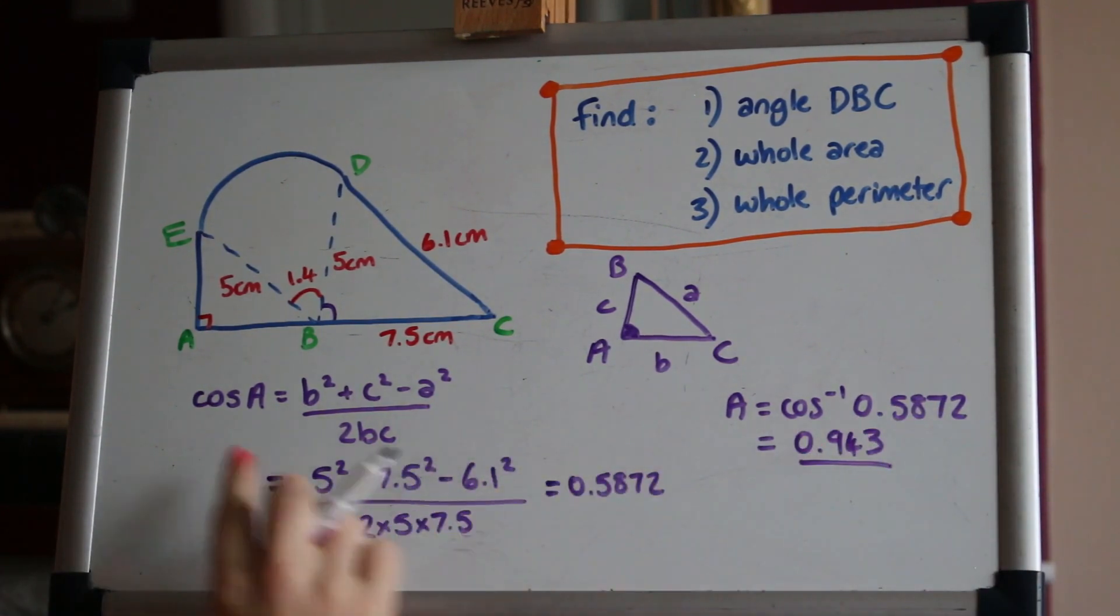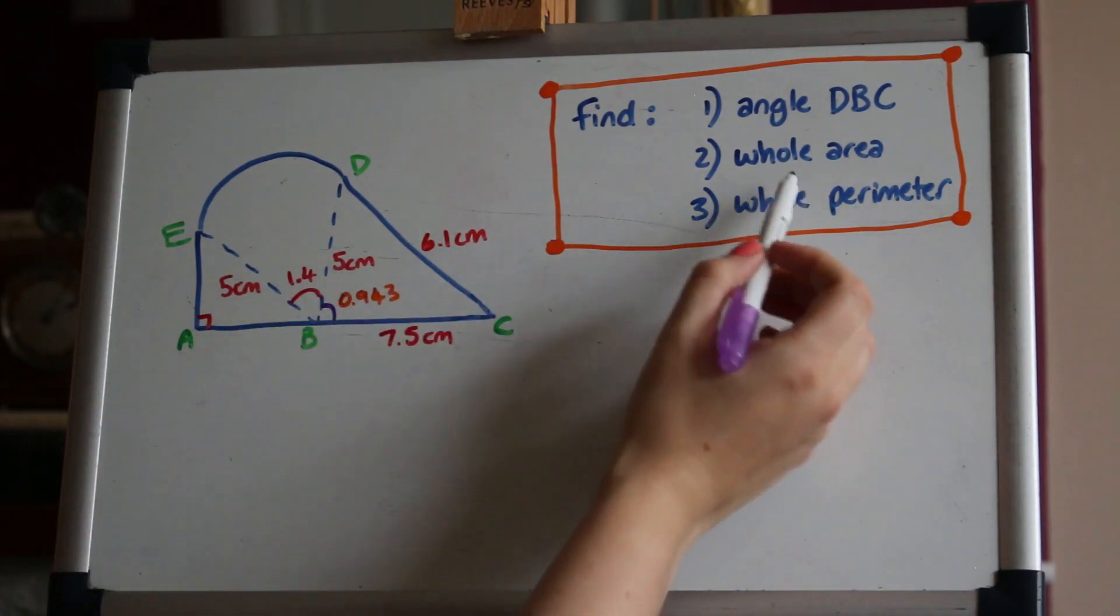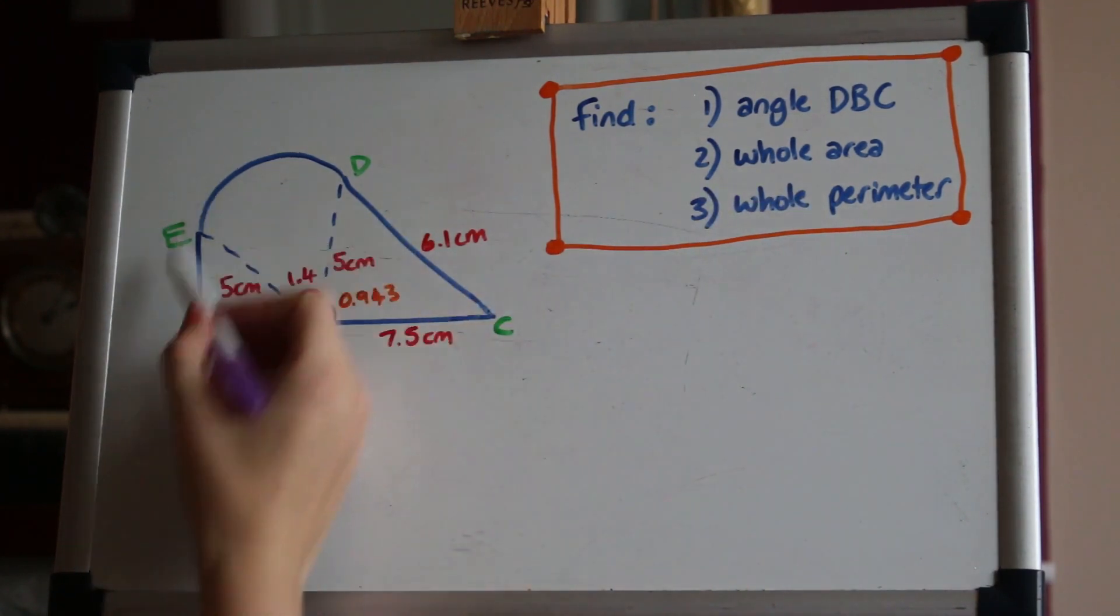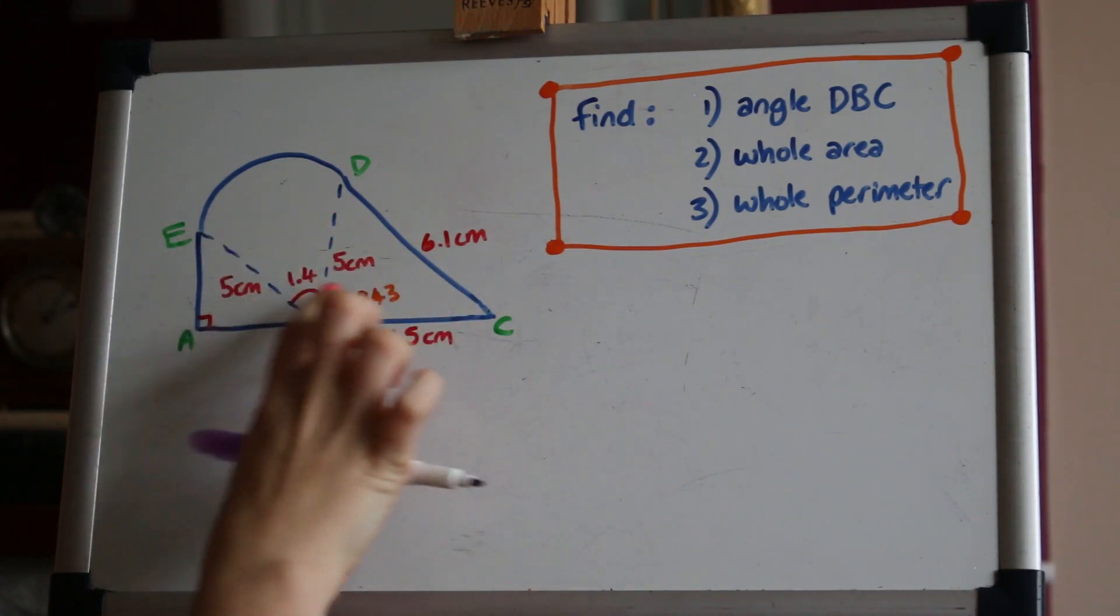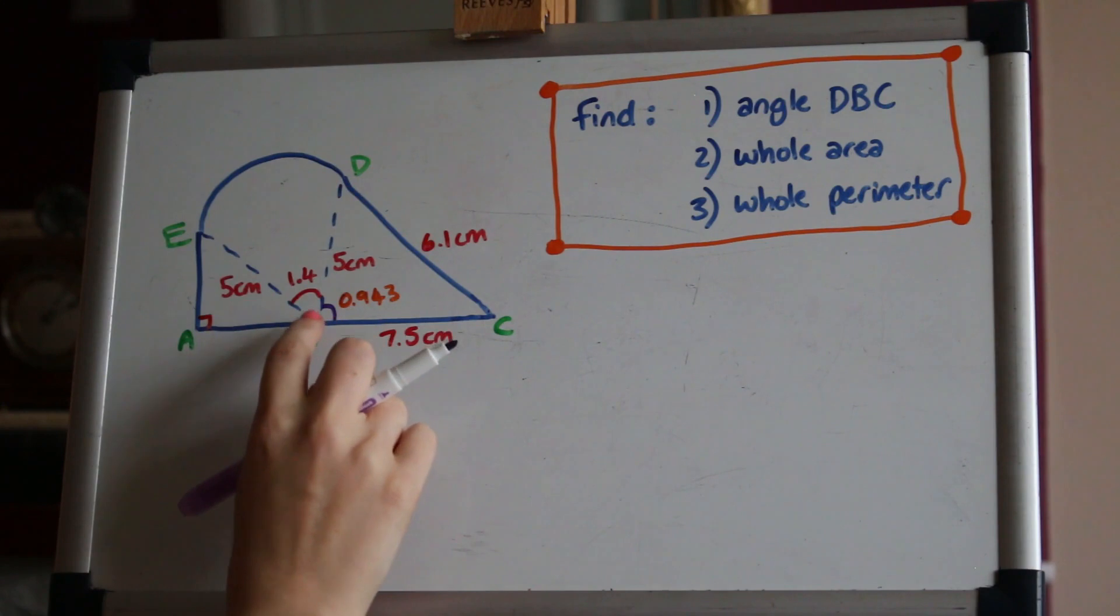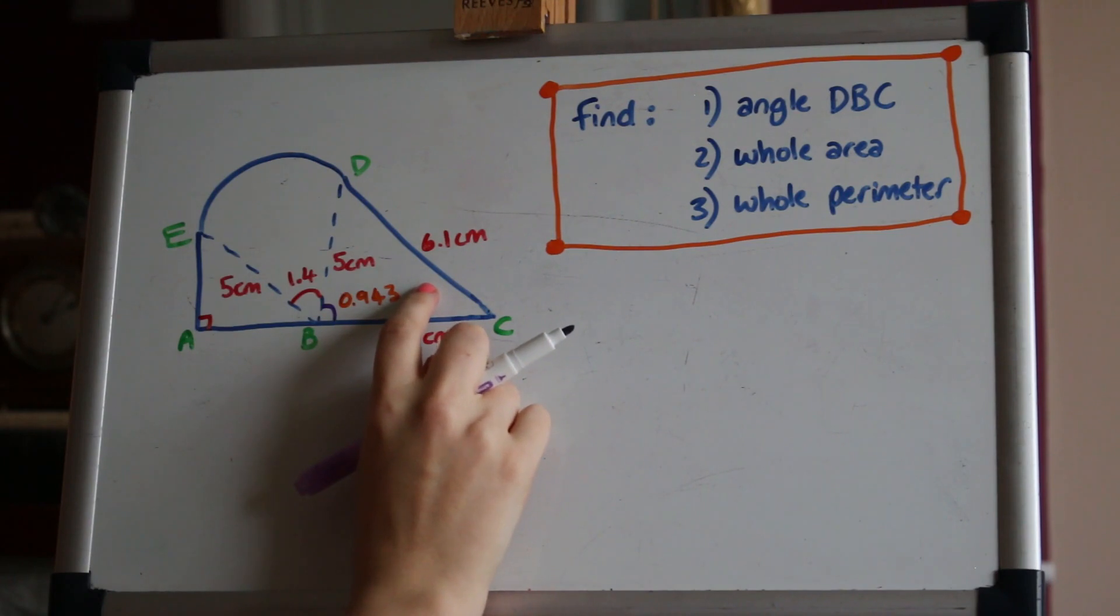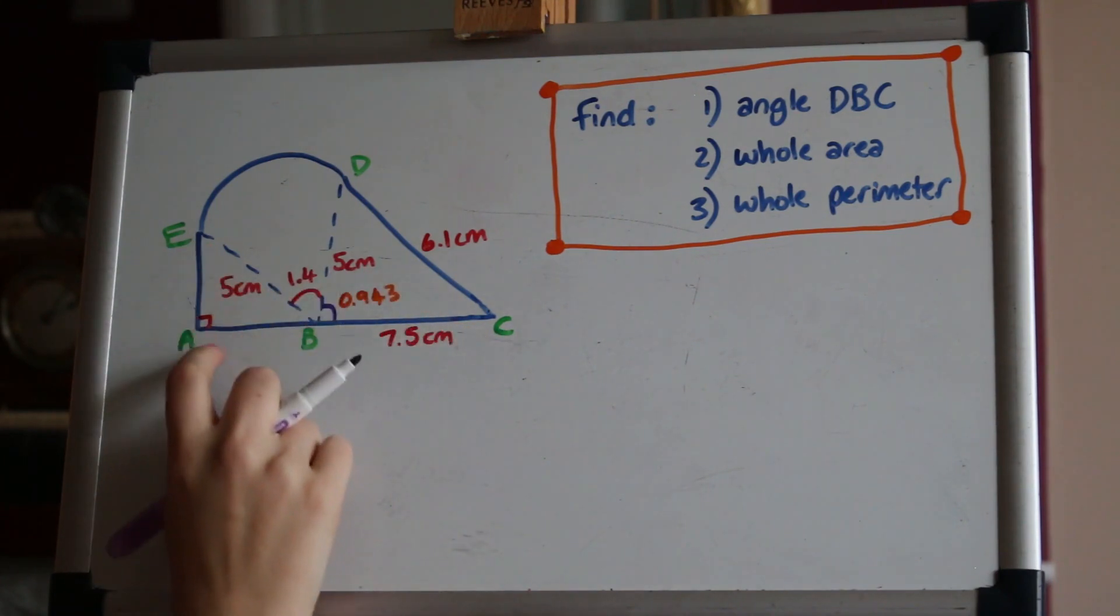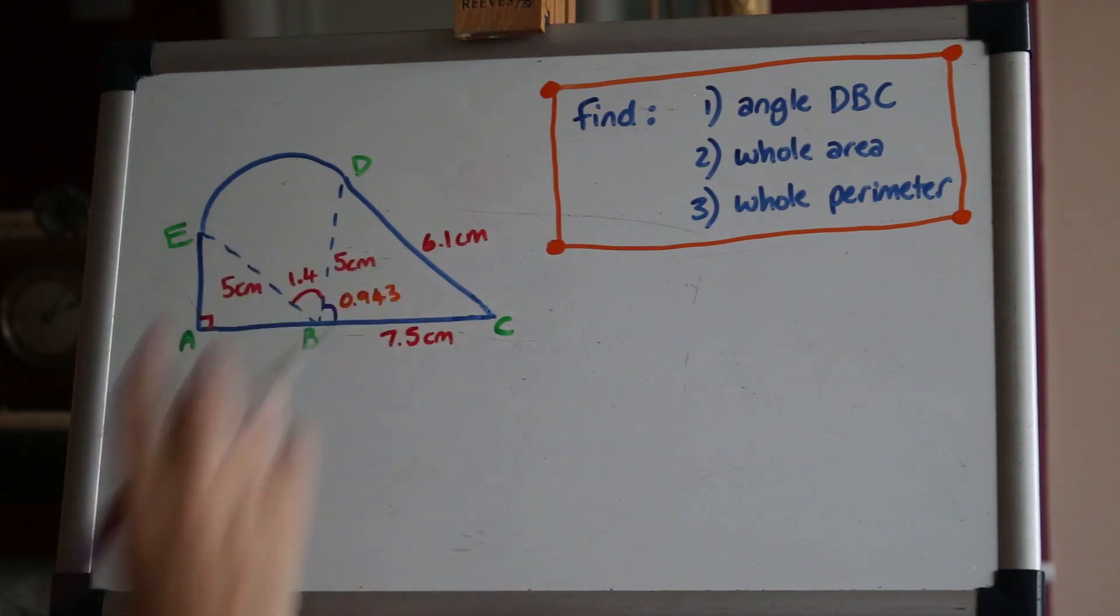Okay so working that through and then undoing the cos at the end to get the angle A is 0.943 radians. Now we're asked to get the whole area of the entire shape A, B, C, D, E. We've got three separate shapes to add up the areas of to do that. We can do the sector area using the formula that we've seen today. We can get the area of the triangle on the right here using half A, B sine C and then the triangle on the left. The easiest way to do that is probably to find the length AE and the length AB but we'll do that last. Let's do the sector first.